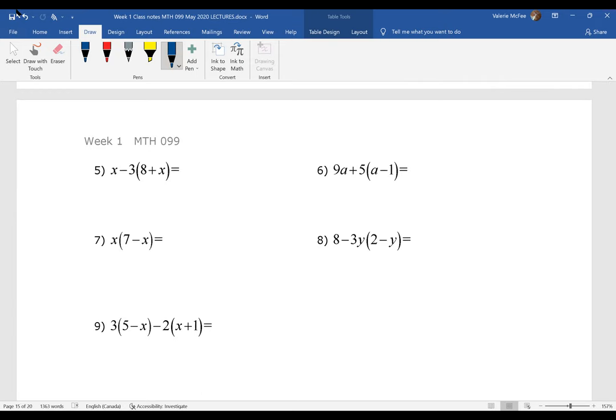Question five is interesting because we have subtraction in front of multiplication. Remember, I can't simplify inside the brackets, so I have to do my multiplication next. And that's the multiplication of negative three times each of these terms. So we keep the X. We're not doing anything with it. Negative three times eight is negative 24. Negative three times X minus three X. Now I see I have like terms, so I can simplify this further. Negative two X minus 24.